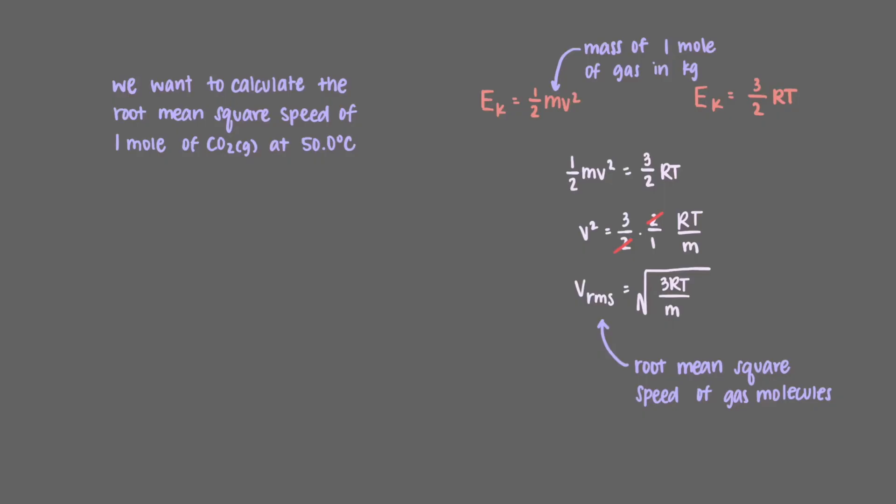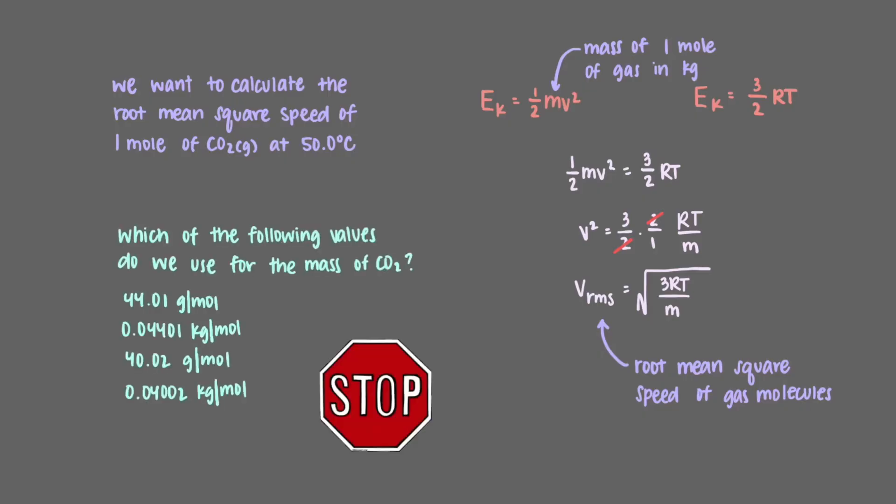Suppose we wanted to calculate the root mean square speed of carbon dioxide at 50 degrees Celsius. Let's start at the beginning. Which of the following values do we use for the mass of one mole of carbon dioxide?